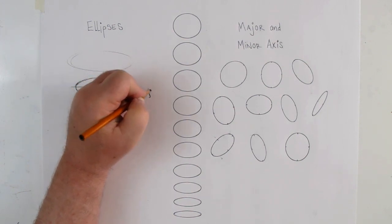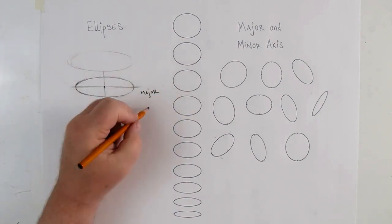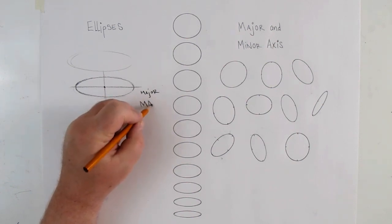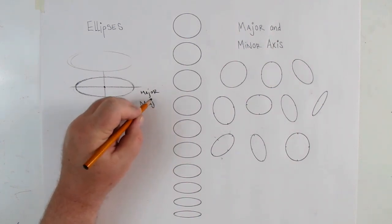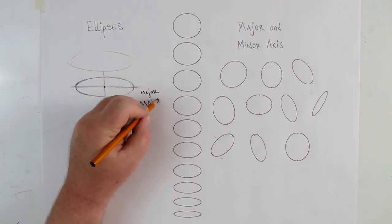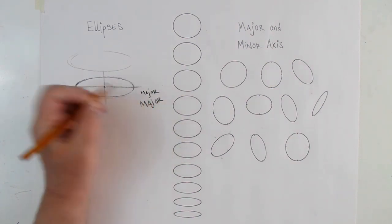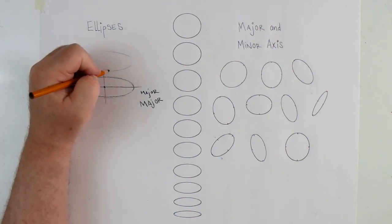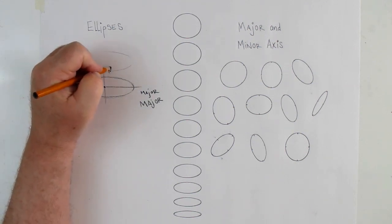We're going to talk a lot about the major axis versus the minor. The major is the longer one, and the minor is the shorter one.